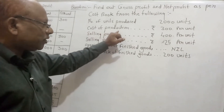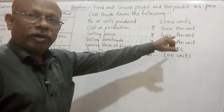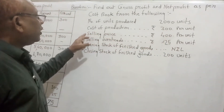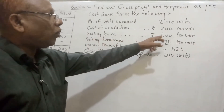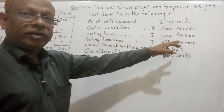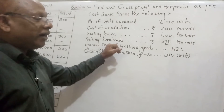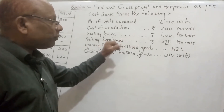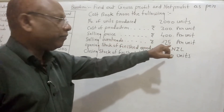The cost of production is 300 rupees per unit, and the selling price is 400 rupees per unit.